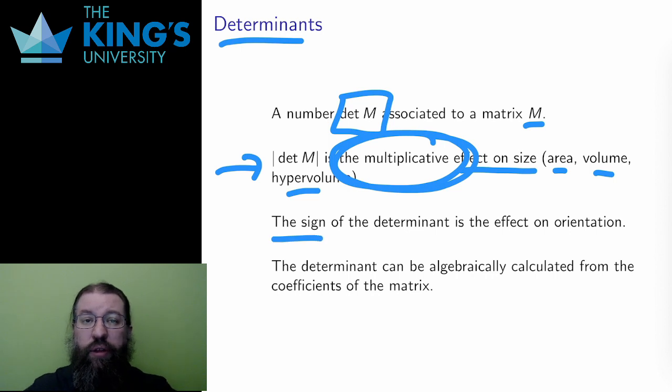What about the sign, whether the determinant is positive or negative? Well, that covers orientation. A positive determinant preserves orientation. Counterclockwise remains counterclockwise in R2. Right-hand rule remains right-hand rule in R3. But if this number is negative, it reverses orientation.